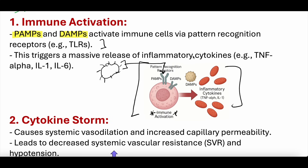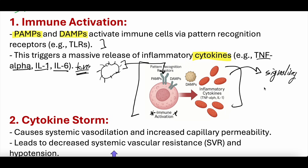Cytokine is a buzzword — if people followed COVID closely, cytokine storm was thrown around often. Cytokines are signaling molecules like TNF-alpha (tumor necrosis factor alpha), interleukins like IL-1 and IL-6, and many more. These cytokines are released into the blood or surrounding environment and cause a signaling cascade to occur. Depending on the exact cytokine, different signals cascade downstream. In septic shock, all of these cytokines getting released cause a lot of downstream effects.